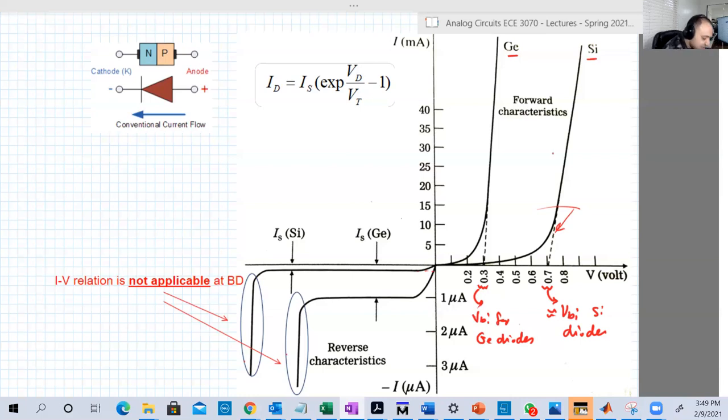People experimentally determine Vbi, the built-in voltage, by extending that very steep curve which looks like linear as a dotted line, and the point of intersection between its extension and the horizontal axis V is considered as Vbi. Same of course for germanium.